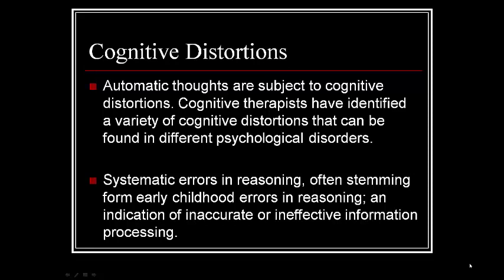Automatic thoughts are subject to cognitive distortions. Cognitive therapists have identified a variety of cognitive distortions found in different psychological disorders — typical thoughts associated with depression and typical thoughts associated with anxiety. Anxiety-related thoughts are more threat-related; depression-related thoughts are more related to self-esteem issues. Cognitive distortions are systematic errors in reasoning, often stemming from early childhood, an indication of inaccurate or ineffective information processing. People often have cognitive distortions that are along a similar vein or theme, related to the core belief with which they're associated. We'll do more work with core beliefs next lecture.